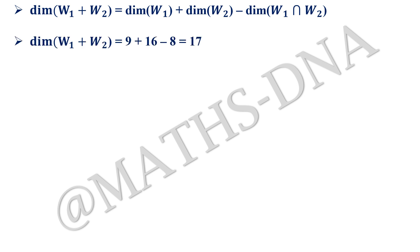Now we just have to apply the formula: dimension of W₁ + W₂ will be equals to dimension of W₁ plus dimension of W₂ minus dimension of W₁ ∩ W₂, and that gives us 9 + 16 - 8 and that is equals to 17, option (b).